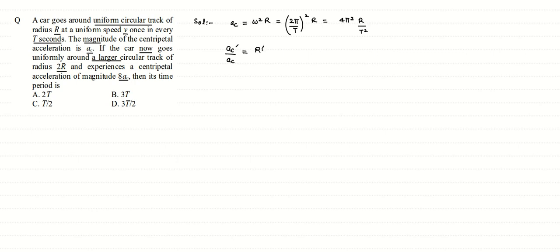Taking the ratio of ac' to ac, we get r' divided by r, multiplied by T² divided by T'². Now ac' is given as 8 times the previous centripetal acceleration, and the new radius r' is given as 2 times the previous r.